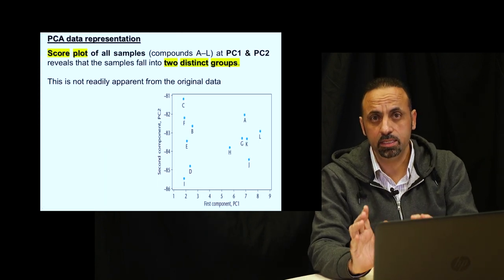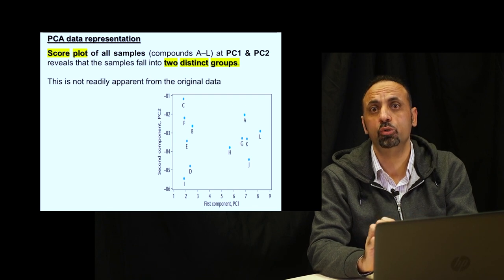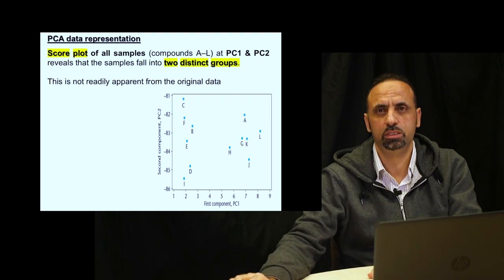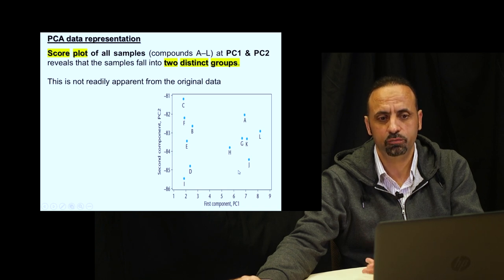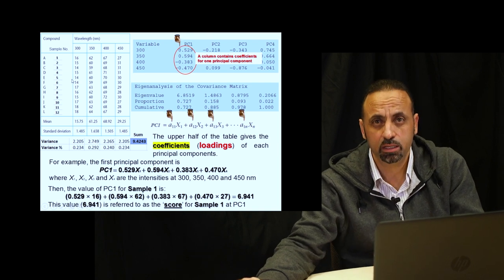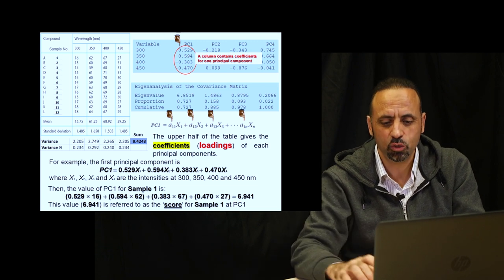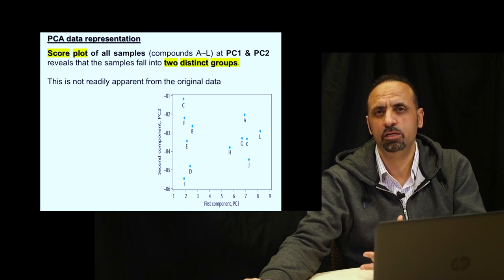If you multiply these coefficients by the original data for each sample, you get something called scores. If you plot these scores on the first and second principal components, you can see how your data can be grouped or discriminated into two groups. Using the previous raw information, you cannot make this kind of categorization, but with PCA it becomes clear. That's why principal components are called hidden variables or latent variables — they reveal information not visible in the original data.